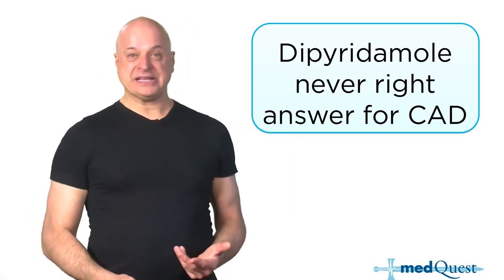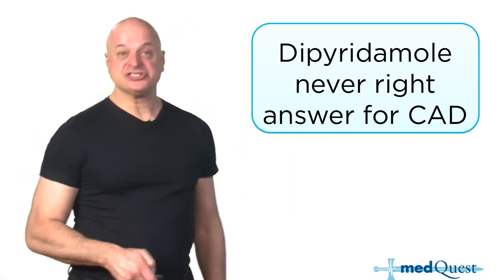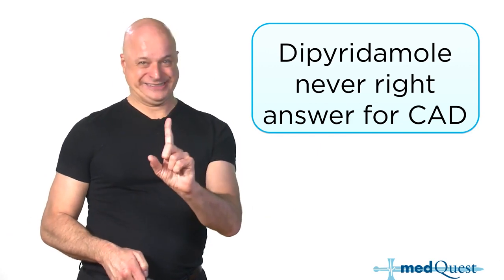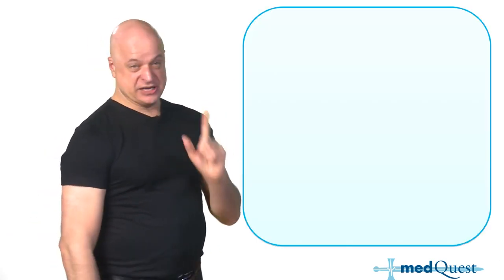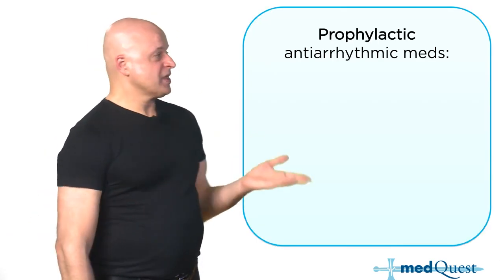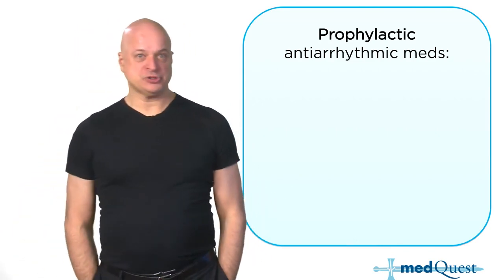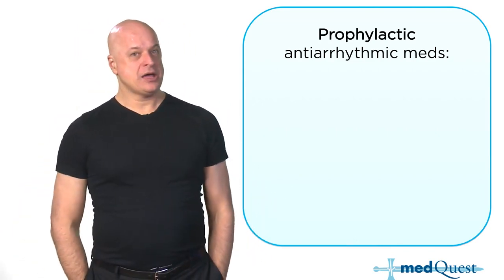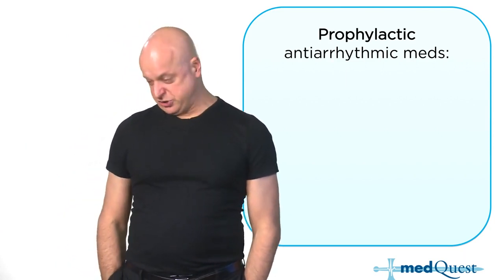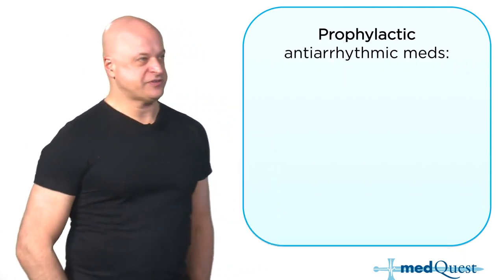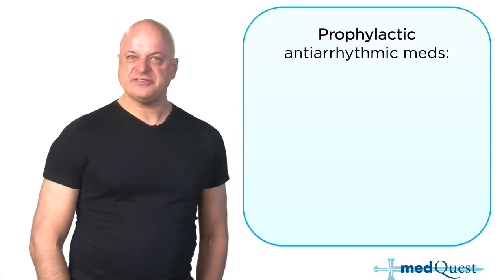Dipyridamole has an indication only in strokes as an alternative to clopidogrel — combined with aspirin for strokes, but not for the heart or peripherals. It's a wrong choice for MI. The most common cause of death post-MI is an arrhythmia — VTAC and VFib.